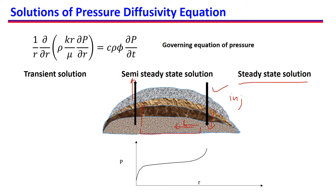Ideally we are never truly at steady state in the reservoir because the fluids keep changing — for example, we are injecting water and producing oil, so the water saturation is increasing while oil saturation is decreasing. So for saturations we are never at steady state; however, for the consideration of pressure, we can be at steady state when the total material inside the reservoir is not changing.